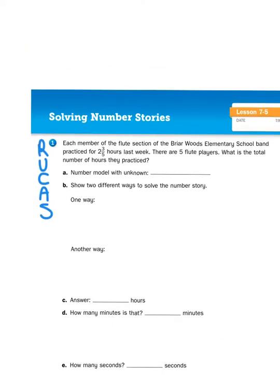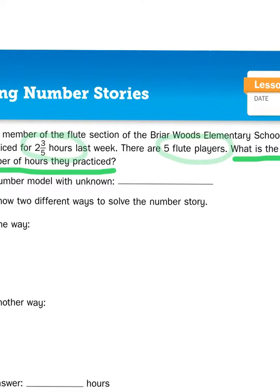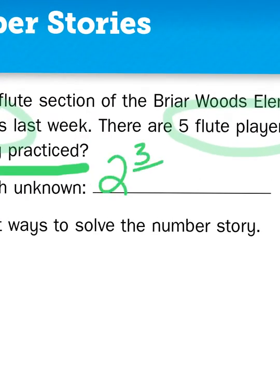So we're going to re-read the problem and take a look at the questions, because there are lots of steps for number one. Each member of the flute section practiced for two and three-fifths hours — let's circle that. As I hinted in the introduction, this is multiplication of whole numbers and mixed numbers, so we're going to create a number model: two and three-fifths times five, with F as our unknown for flute playing.